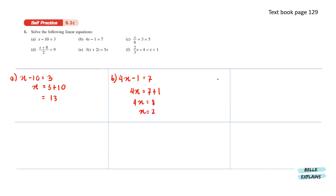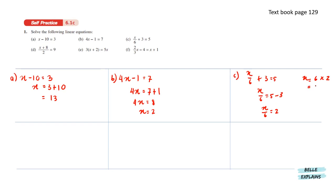Next, x over 6 plus 3 equals 5. So x over 6 equals 5 minus 3, which gives x over 6 equals 2. Changing this from division to multiplication gives us 2 times 6, which equals 12.